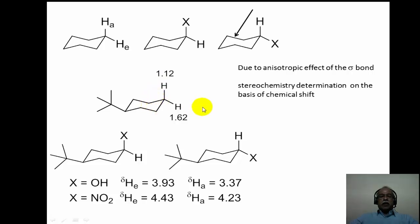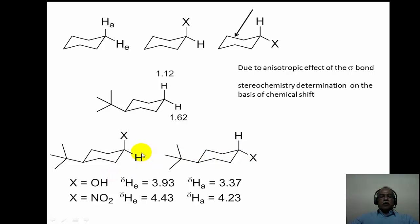For 4-tert-butyl cyclohexanol or the nitro-substituted 4-tert-butyl cyclohexane, the OH or nitro group can be either axial (cis isomer) or equatorial (trans isomer). The equatorial hydrogen attached to the carbon bearing the electronegative center should experience a higher delta value compared to all other hydrogens in the molecule, making it easy to identify in the spectrum.